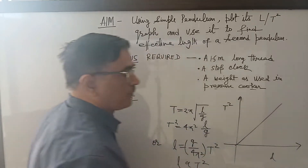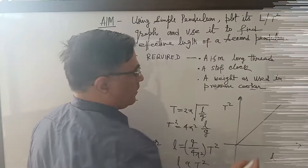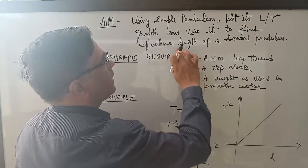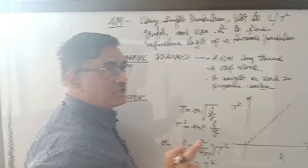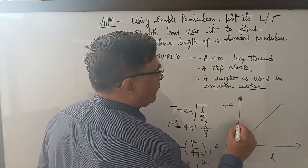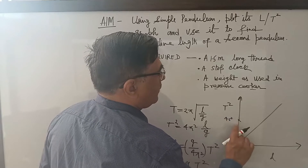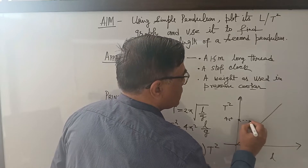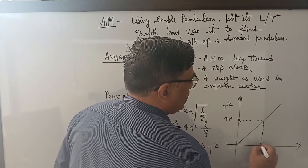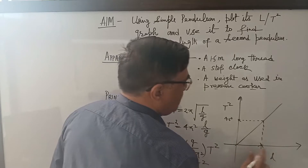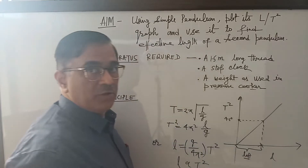In this experiment you need to find the effective length of the second pendulum. Since the time period of the second pendulum is two seconds, T² becomes four seconds squared. Mark four on the T² axis, draw a horizontal line, then drop a perpendicular to the L-axis. The corresponding length is the effective length of the second pendulum.